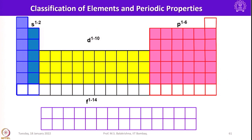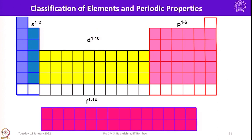Then we have the 3d, 4d, and 5d series, and of course we have the f-block elements. F-block elements number about 28, and the d-block has 27 elements. Together, 55 elements are known as transition elements.